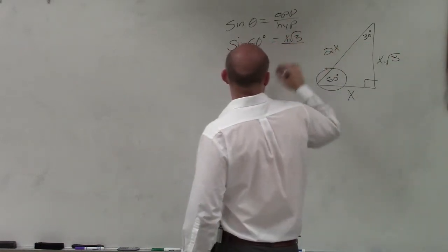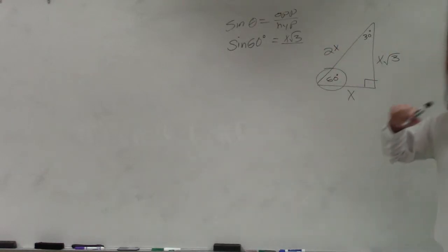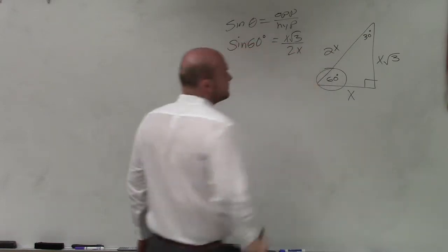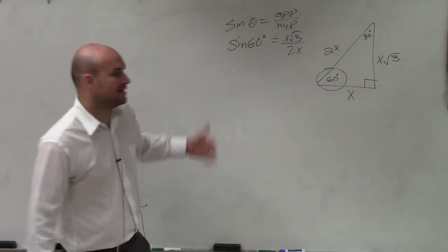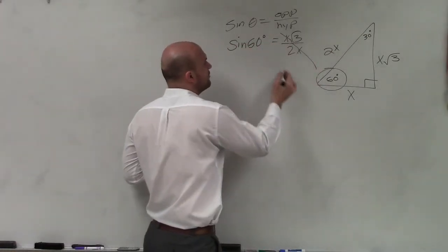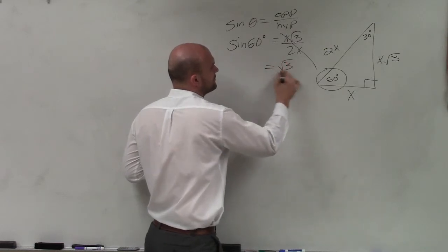And Keith, what is the hypotenuse of this triangle? 2x. So I do opposite over hypotenuse. My x's divide to 1, and I'm just left with the square root of 3 over 2.